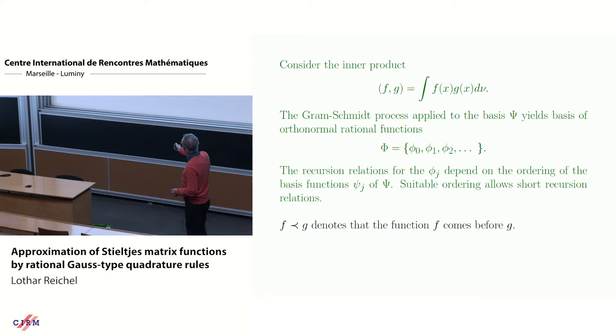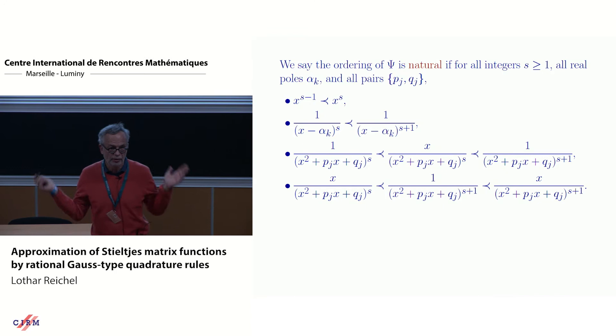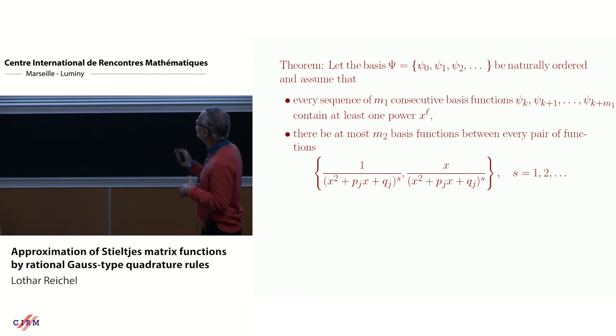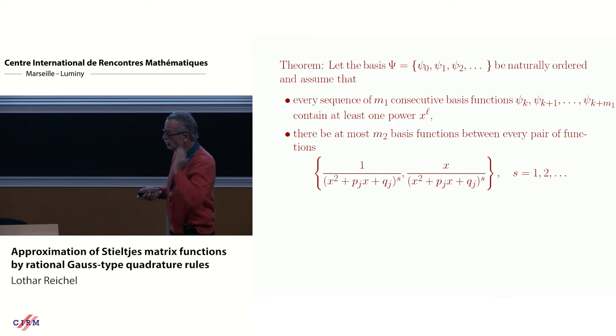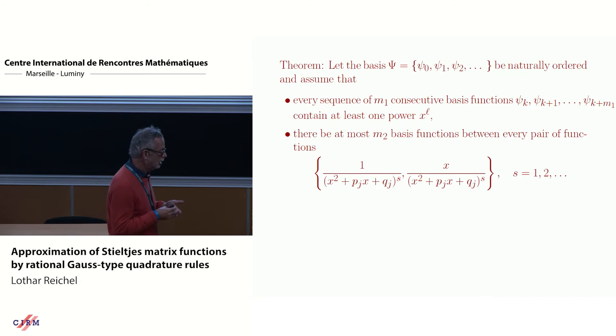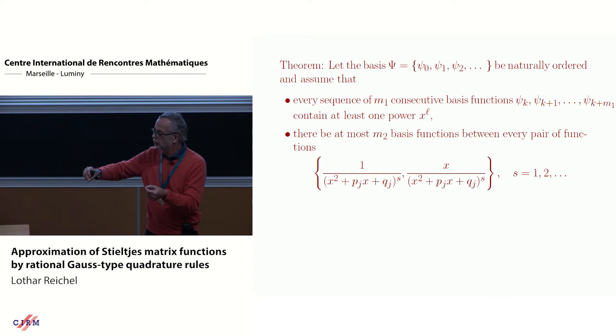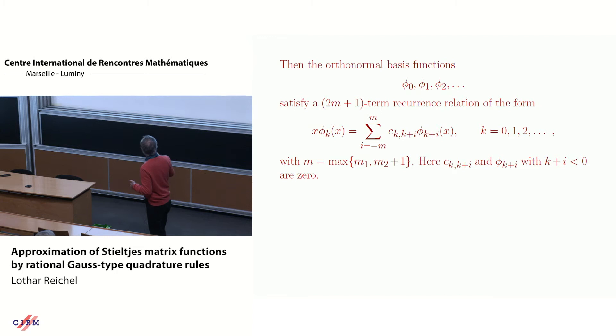So we need to order these. And so we have this inner product with a new measure. And this is my notation for one function comes before the other. And what you require is that basically lower powers come before higher powers. This is for simple poles or complex conjugate poles. That's what we need to do. And then with this property, we can then show that short recurrence relations exist. How long are they? Well, they are short in the sense that the length, the number of terms in recurrence relations is independent of the number of steps one takes.